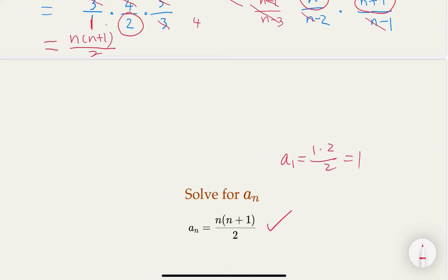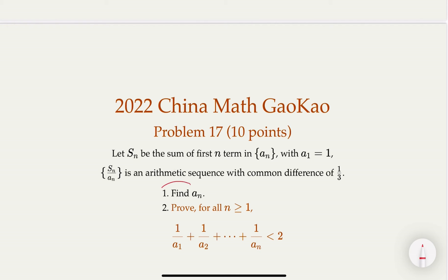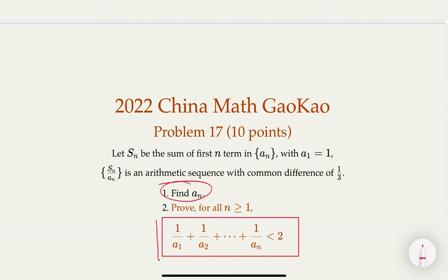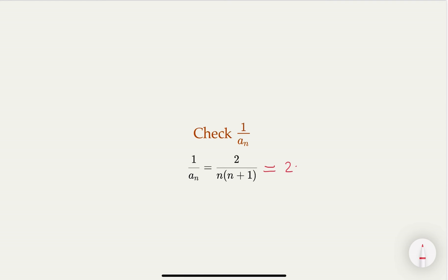That's part one. Now for part two, we try to prove the inequality. We're given An equals n times n plus one over two, and we want to find one over An. Flipping it, the trick is to write it as two times one over n minus one over n plus one — a common trick used in series-related problems.